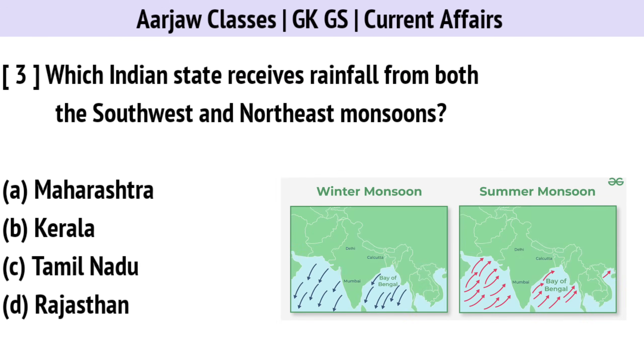Which Indian state receives rainfall from both the southwest and northeast monsoons? The correct option is C — Tamil Nadu.